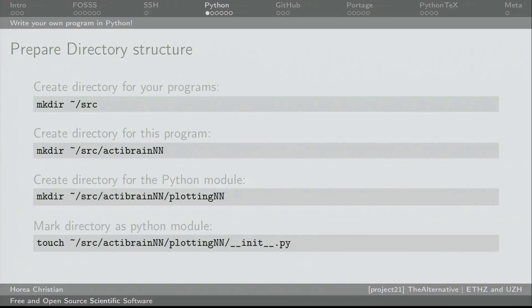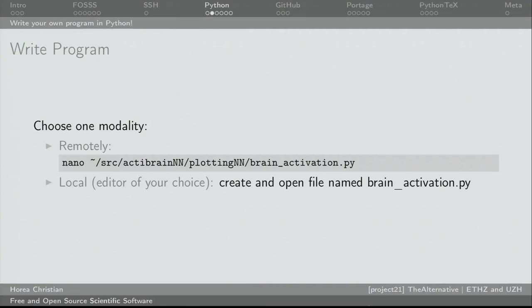Now we're going to write the actual program. You can write it with nano directly via the command line on the server, which I recommend. You could also write it on your own computer and upload it with SCP. If you're going to use nano, run the command: nano, your home path, the source directory, the base directory of your program, the base directory of the module, and the name of the actual function file — 'brain_activation.py'. Type enter and a text editor window will appear. Once everybody is in nano, we can move on to the actual program.